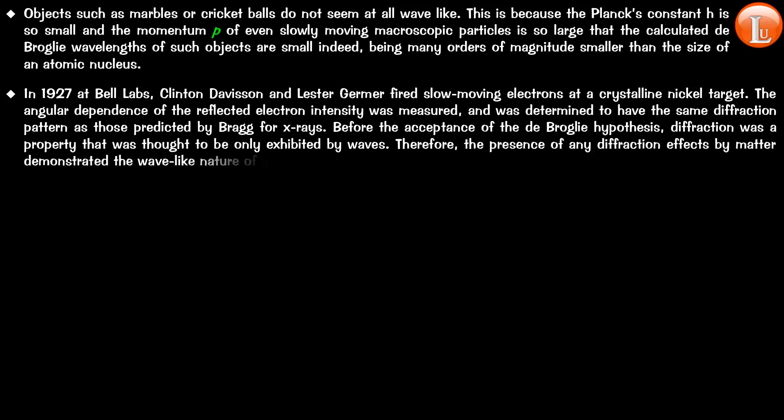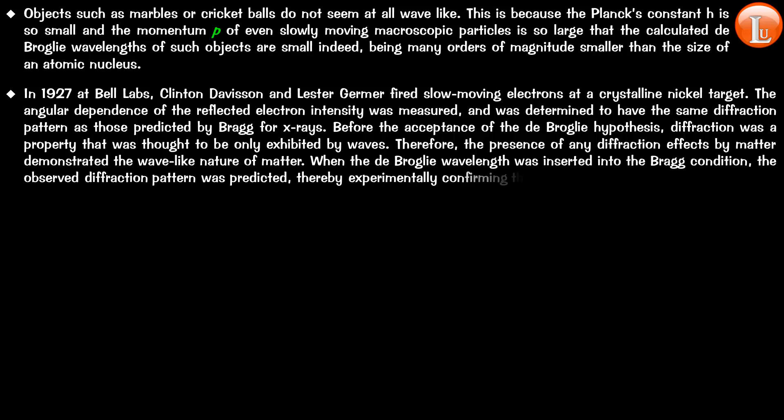And Bragg's law for X-rays is meant for diffraction pattern. And before the acceptance of the de Broglie's hypothesis, diffraction was a property that was totally associated only with waves. Therefore, the presence of a diffraction pattern of an electron beam demonstrated the wave-like nature of matter. When the de Broglie's wavelength was inserted into the Bragg condition, the observed diffraction pattern was predicted, thereby experimentally confirming the de Broglie's hypothesis for electrons.